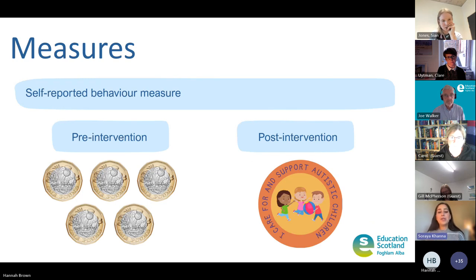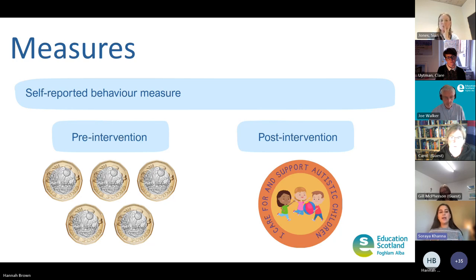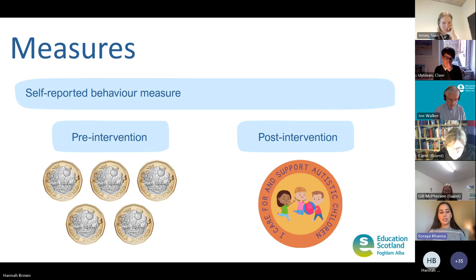I also administered a self-reported behaviour measure. Pre-intervention, I asked children to allocate five coins between a neurotypical and autistic hypothetical peer. After the intervention, to measure self-reported behaviour, I asked whether they would choose to wear a sticker that says 'I care for and support autistic children.'